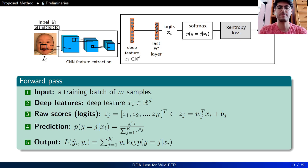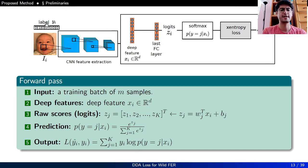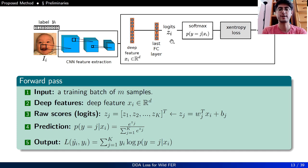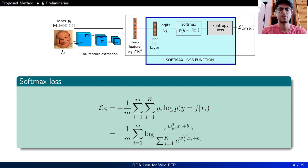Before diving into the proposed method, let's review some preliminary concepts. In a CNN-based recognition system, the input is a training batch of M samples containing the input image and its associated label. CNN extracts spatial features and the d-dimensional deep features are pooled using a pooling layer. This d-dimensional deep feature is fed to the last fully connected layer to extract raw scores for all classes, or logits. The softmax function calculates normalized scores to yield the prediction, and the cross-entropy loss calculates the discrepancy between the prediction and the true label. Softmax loss is the combination of the last fully connected layer, the softmax function, and the cross-entropy loss.